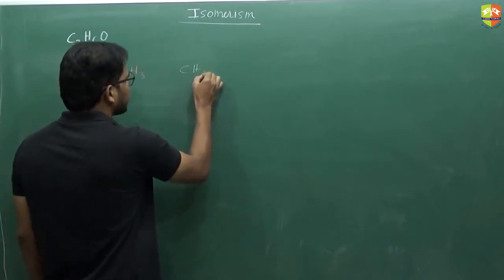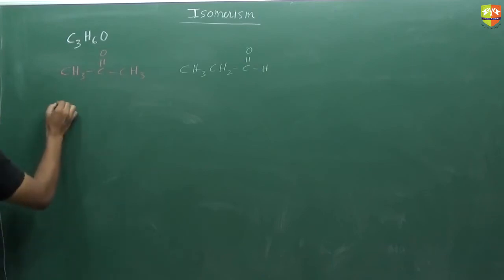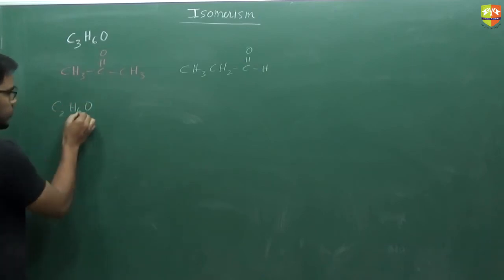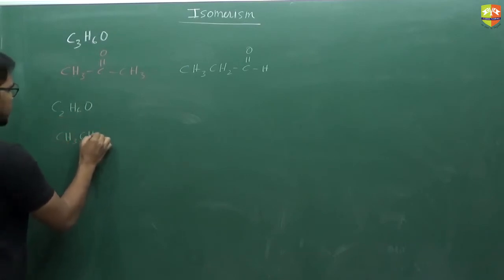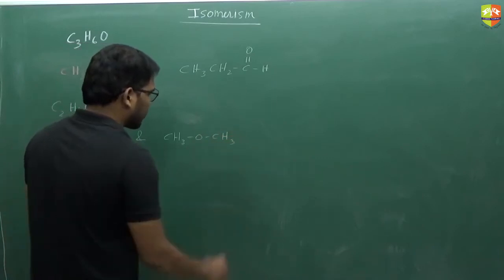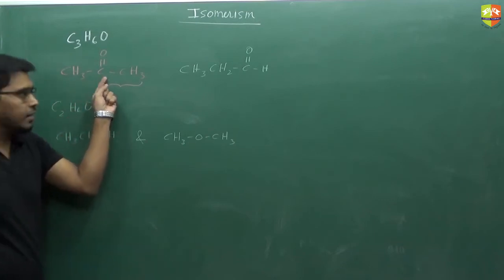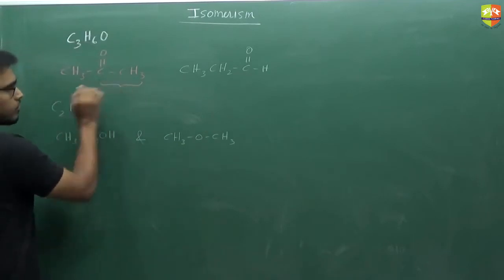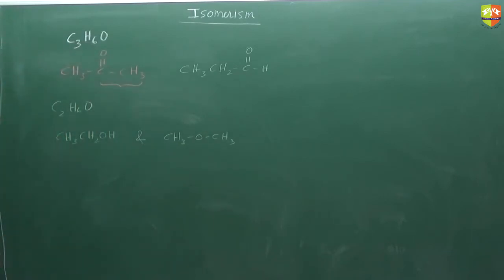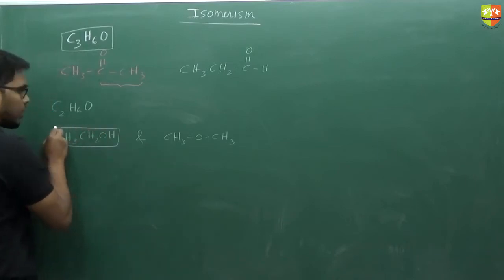Another one we can also write: CH3, CH2, C double bond O, H. These two structures are possible. Even if I take C2H6O, for this also two different structures are possible. One is alcohol: CH3, CH2, OH. And the other one is ether: CH3, O, CH3. So the point is these two molecules are entirely different — one has ketone as a functional group and this one has aldehyde as a functional group.